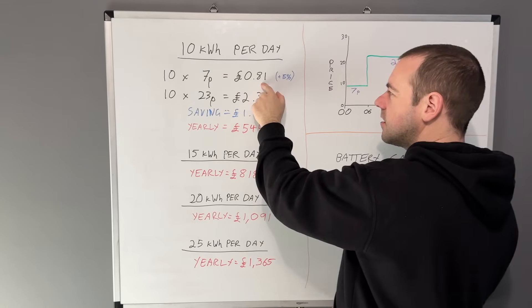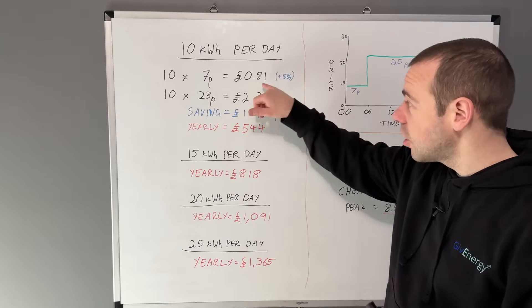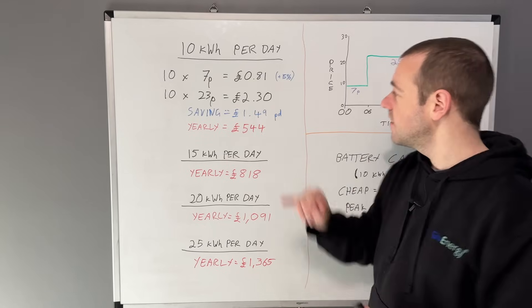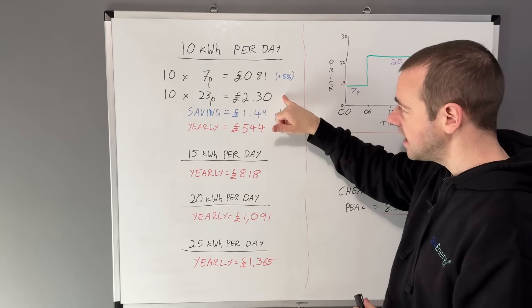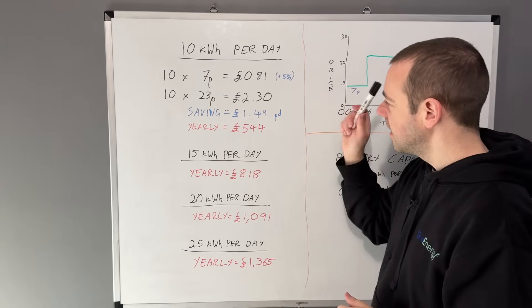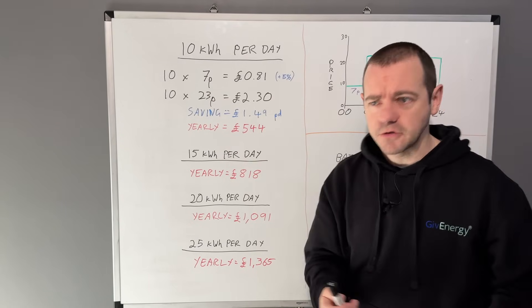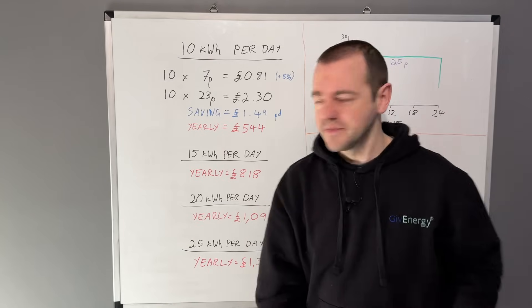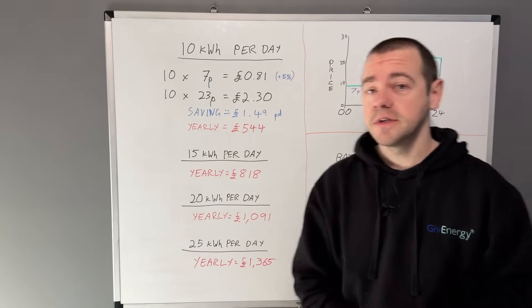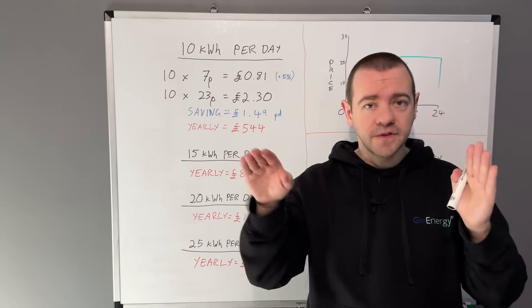So effectively, I'm saying that on this tariff, if you're using 10 kilowatt hours per day, the average cost would be 81 pence on the time of day tariff and £2.30 on a flat rate. That means you'll save £1.49 per day. Now that doesn't sound like a lot, but over a year that's £544 saving, purely by changing from a standard flat rate to a time of day tariff.